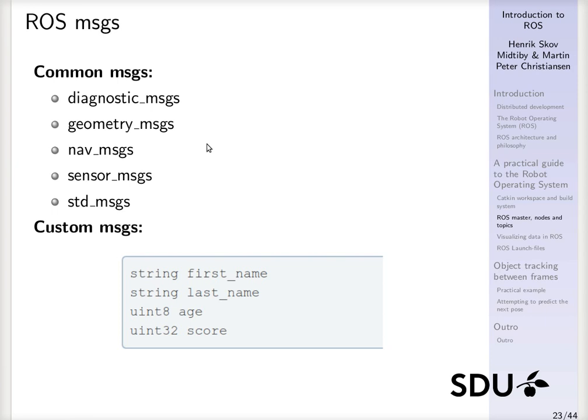By utilizing a file format more or less like this, where in a certain file you specify that this message is composed of a string associated with the name first_name, a different string associated with last_name, then an unsigned integer using 8-bit with the age, and an unsigned integer with 32 bits with a score. You present the data type and then the name of that value that is pushed through the message system.